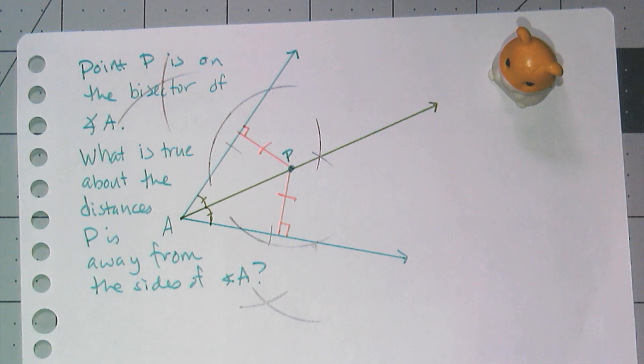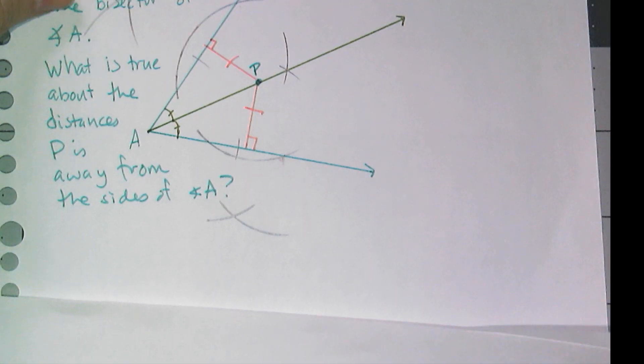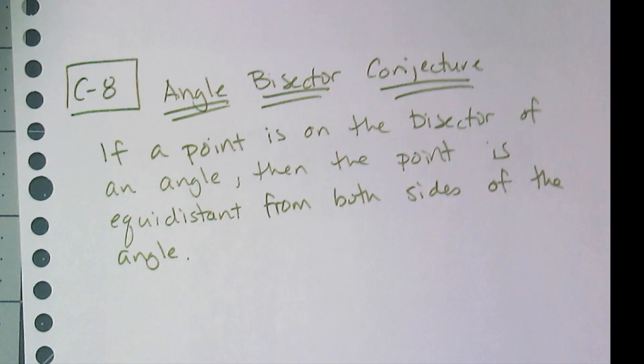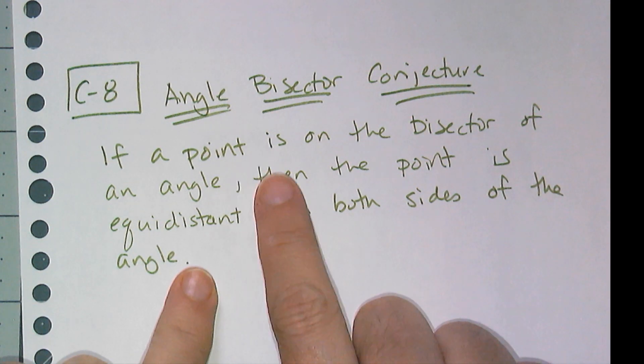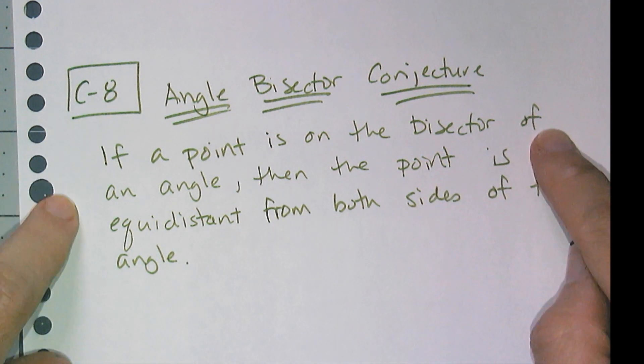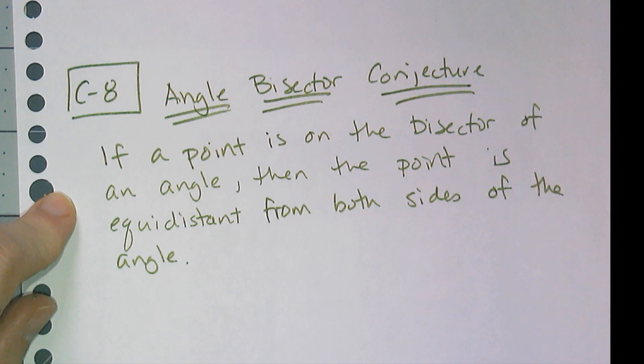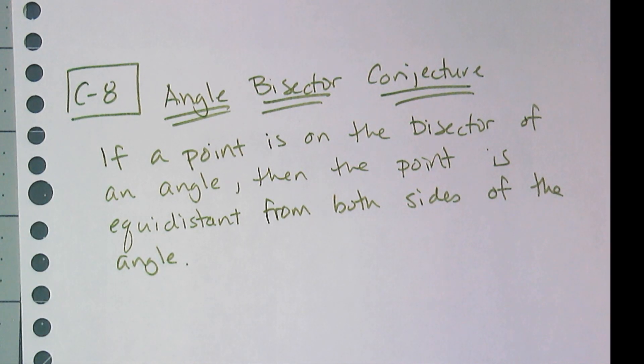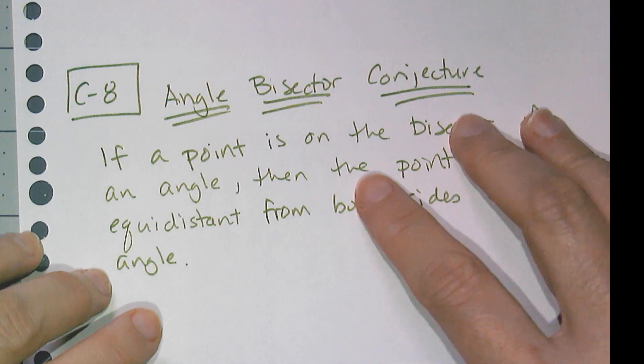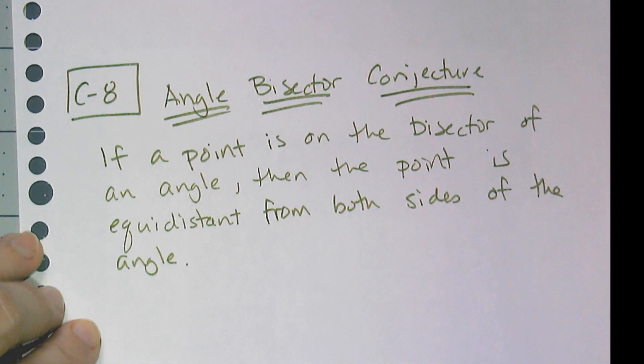So that means that any point on a perpendicular bisector of an angle is going to be equidistant from both sides of that angle, which sounds like a conjecture to me, which it is: Conjecture C-8, the Angle Bisector Conjecture. It says if a point is on the bisector of an angle, then the point is equidistant from both sides of the angle. Now we are going to prove this conjecture using deductive reasoning a little bit later on. I'll give you a hint right now—it's going to be about triangles.